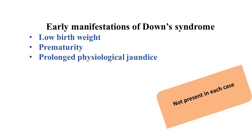If you see a baby in the neonatal age, it's difficult to assess developmental delay, but you can pick up the dysmorphic features. Other early features in neonatal Down syndrome include low birth weight, prematurity, and prolonged jaundice.